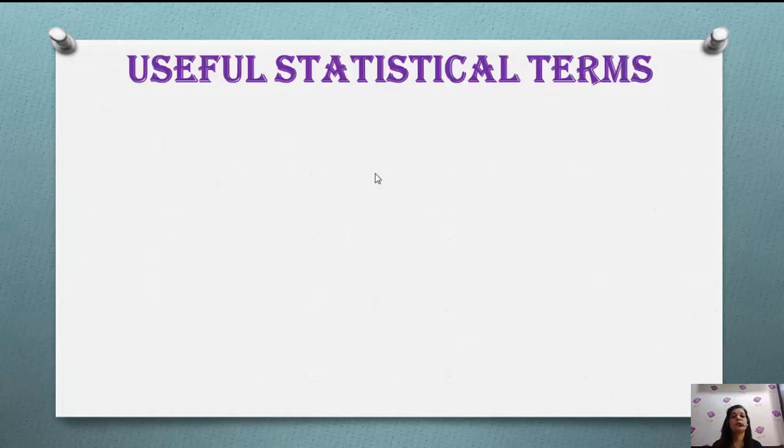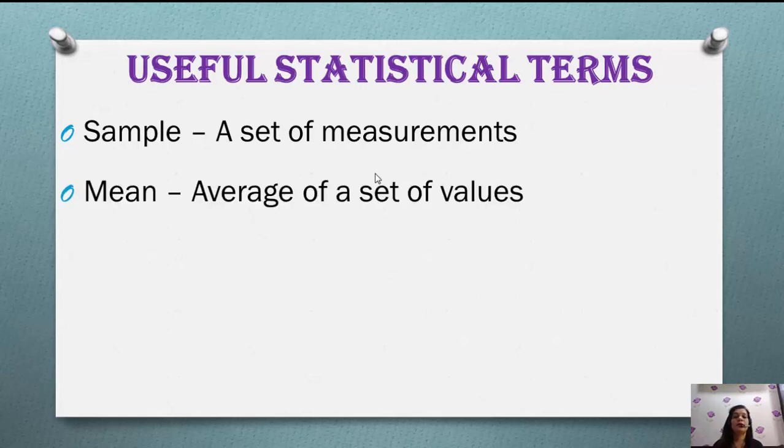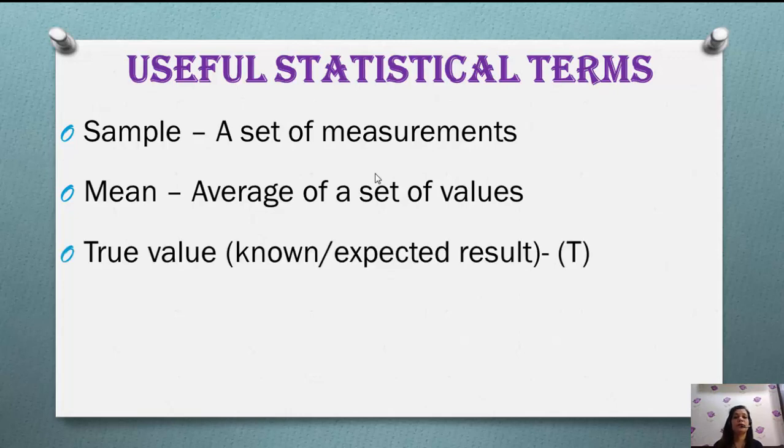There are some terms utilized as statistical terms during data analysis. Sample is a set of measurements. Mean is the average of observations - all observations summed and divided by number of observations. True value is the term utilized when you know the expected results or exact value. Observed value is the value when you perform the experiment and get the observations.